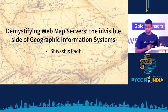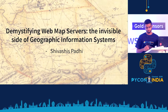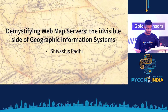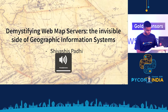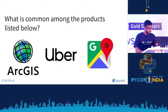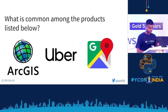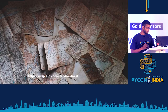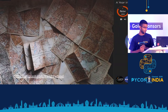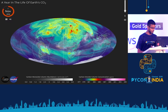Let's start the talk. What is common among ArcGIS, Uber, and Google Maps? Clearly, they all involve maps. But we won't be talking about 2D paper maps — they're pretty cool, but we can't use Python on those.